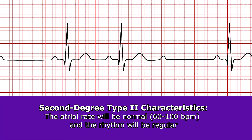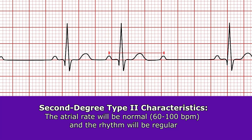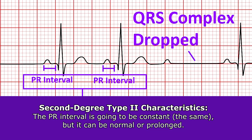When you look at the characteristics and criteria for this rhythm, the atrial rate will be normal — 60 to 100 beats per minute — and the rhythm will be regular. The PR interval is going to be constant, staying the same throughout, and it can actually be normal or prolonged.